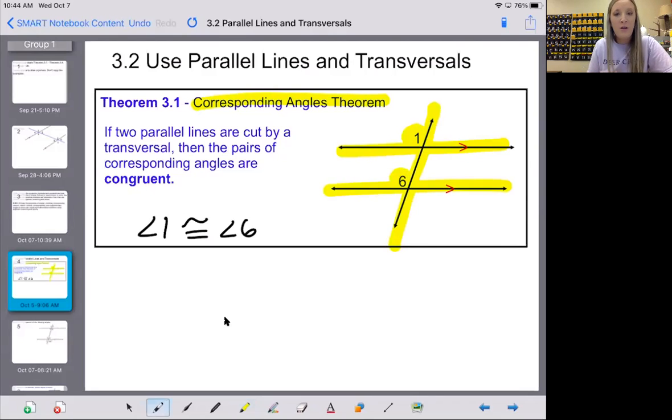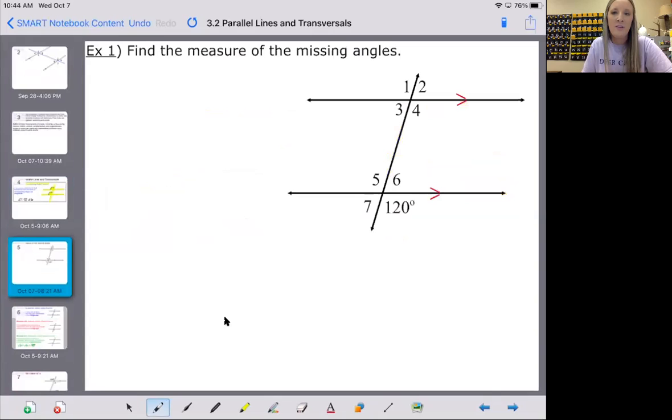Anytime you see a pair of corresponding angles, you can automatically now assume they are congruent if the lines are parallel. So we can mark them using our little arcs there. Let's use that idea to answer our first example.